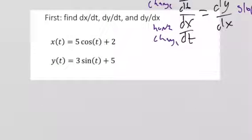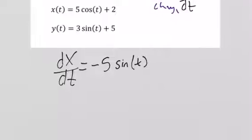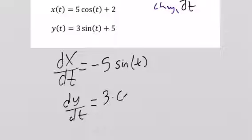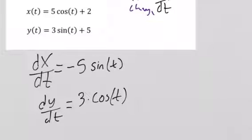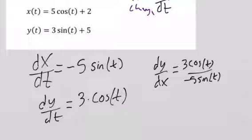Let's find dx/dt first. The derivative of cosine is negative sine, so dx/dt = −5sin(t). The derivative of 2 is 0, so that's our final dx/dt. For dy/dt, the derivative of sine is cosine, so dy/dt = 3cos(t). Then dy/dx = 3cos(t) / (−5sin(t)). So dx/dt is the horizontal rate of change, dy/dt is the vertical rate of change, and dy/dx is the actual slope of the curve at any given time.